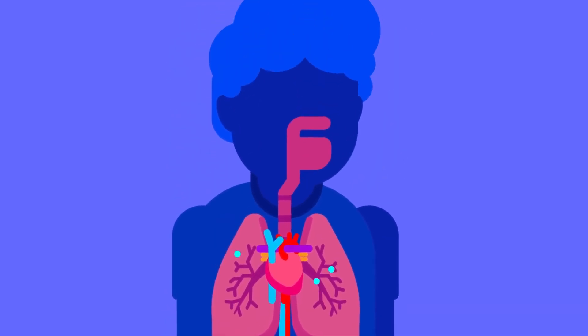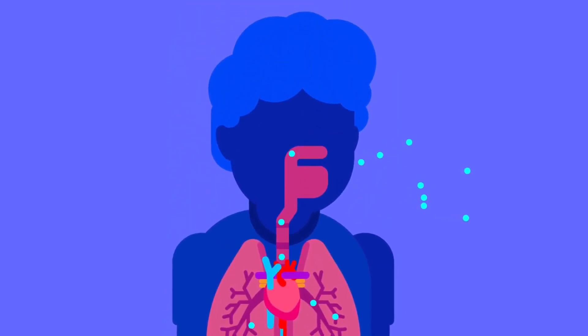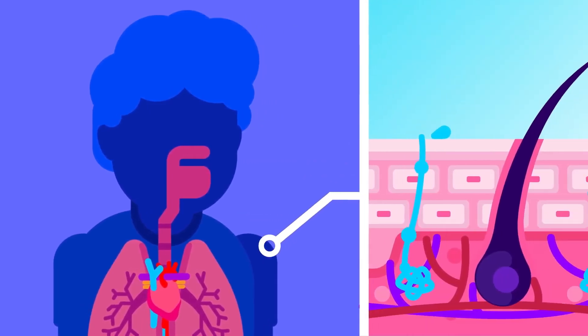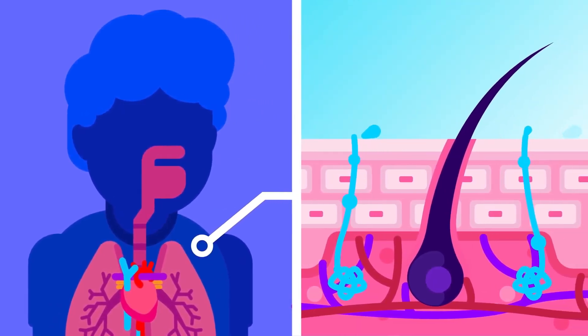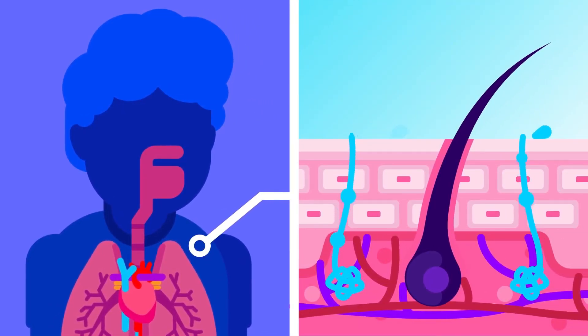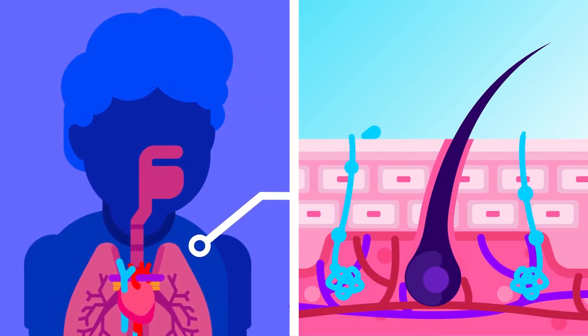The lungs, in the form of exhaled air, excrete carbon dioxide. Our skin, in the form of sweat, eliminates heat, mineral salts, urea, and excess water.